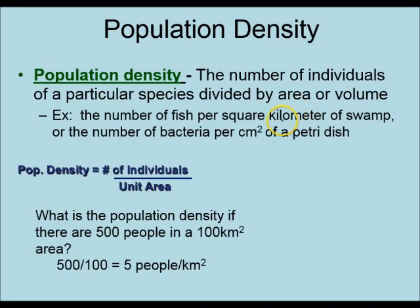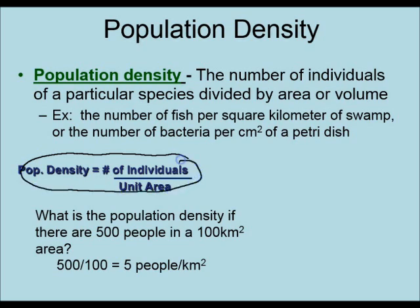We can also talk about population density. Population density is the number of individuals of a population per unit area. For example, that could be the number of deer in a forest that's 100 kilometers squared. So the equation is: population density equals number of individuals per unit area. For example, what is the population density of 500 people in a 100 kilometer square area? Take 500 divided by 100 and you get 5 people per kilometer square — that's the population density of that human population.